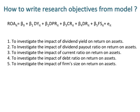Number two objective is to investigate the impact of dividend payout ratio on return on assets. Number three objective is to investigate the impact of current ratio on return on assets. Number four objective is to investigate the impact of debt ratio on return on assets. Number five objective is to investigate the impact of firm size on return on assets.